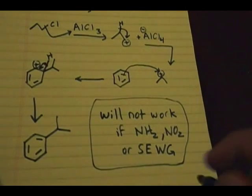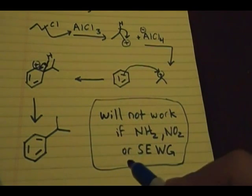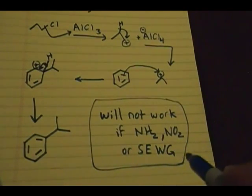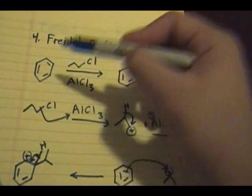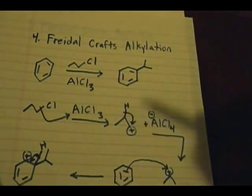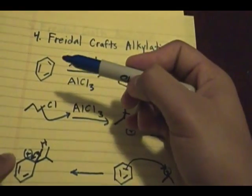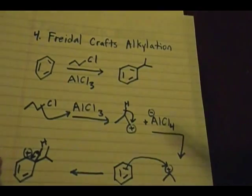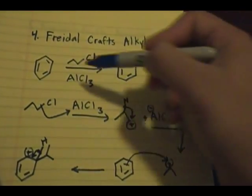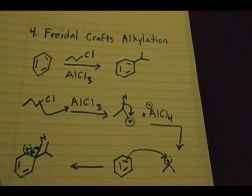These reactions will not work if NH2, NO2, or a strong electron withdrawing group is present on the aromatic ring. So if your benzene ring has an NH2, NO2, or a strong electron withdrawing group, the result will be no reaction — you will not draw a product because it cannot work.